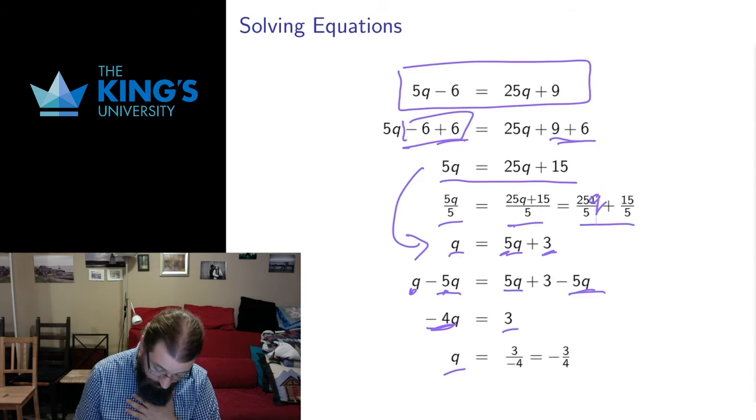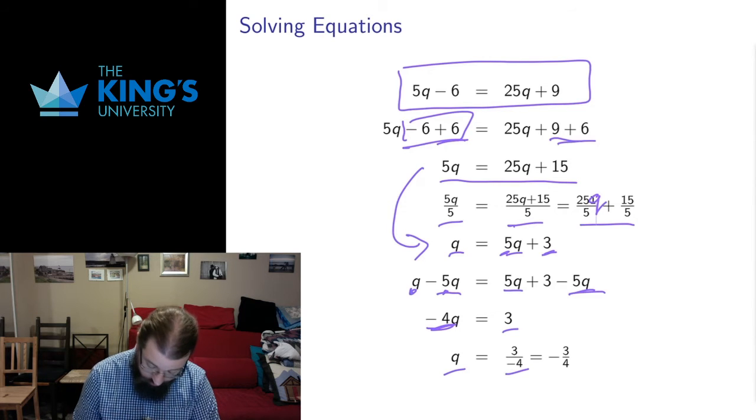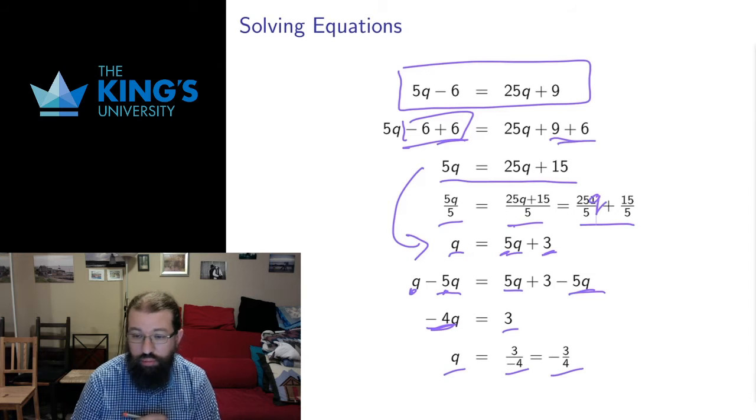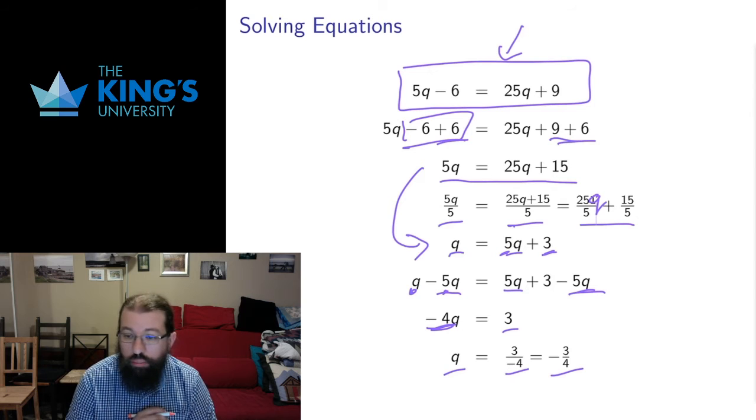Finally, I can divide by minus 4. 3 divided by negative 4. With fractions, that's the same thing as negative 3 quarters. That is the solution to this original question. What number satisfies that equation? Negative 3 quarters.